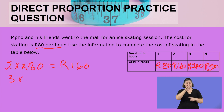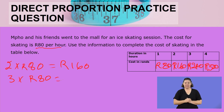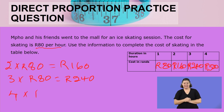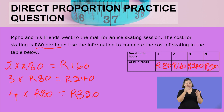For three hours, we take 3 multiply by 80 rand — press the calculator with me — which gives us 240. And for four hours, 4 multiply by 80 rand gives you 320. So we have calculated the cost of skating as the number of hours increases. Remember, what is key with direct proportion: when one increases, the other one will increase as well.